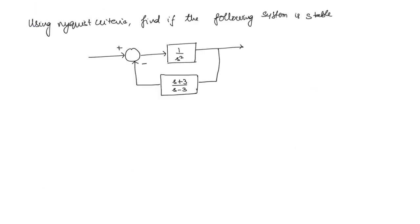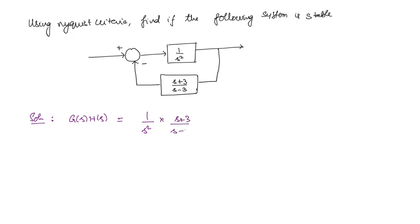The next question: using Nyquist criteria, find if the following system is stable. They have given a system in block diagram form, so we first have to find the transfer function. Since we are concerned with G(s)·H(s), the open loop transfer function, it is enough to find that. G(s) = 1/s² and H(s) = (s+3)/(s−3).